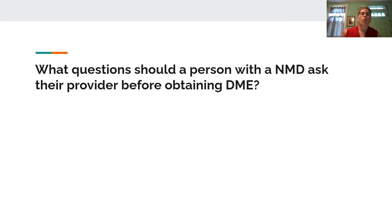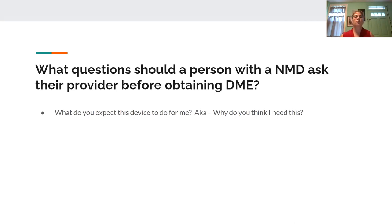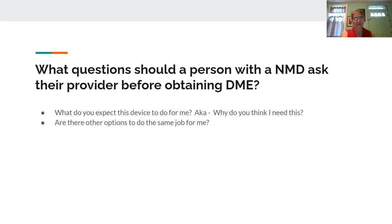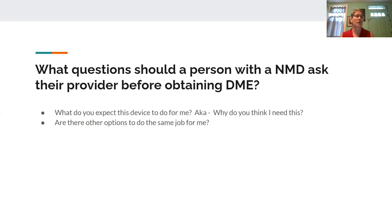Let's finish with what questions you, as a person with a neuromuscular disease, should ask your provider before obtaining DME. The first question is: what do you expect this device to do for me? Your provider should explain the downstream problem that indicates the equipment — for example, with foot drop: you have weak muscles causing your foot to drop, causing you to hike your hip to lift your leg, burning more energy, risking a trip, and becoming short of breath. The brace helps save your energy, protect your muscle, prevent tripping, and stabilize you when walking. Your therapist should be able to explain this for whatever equipment they recommend.